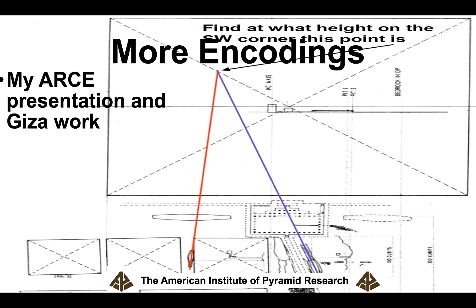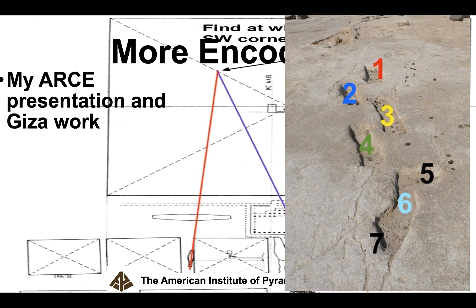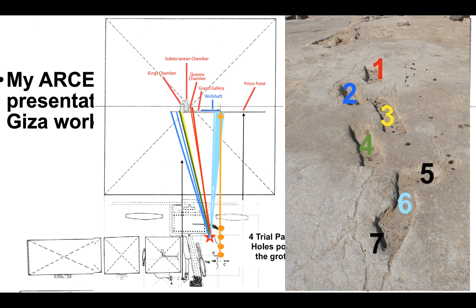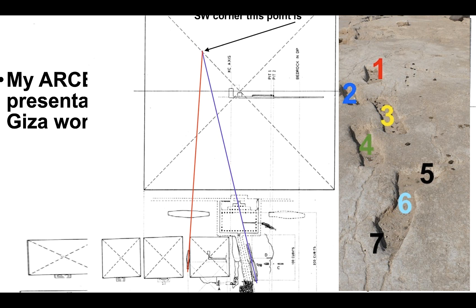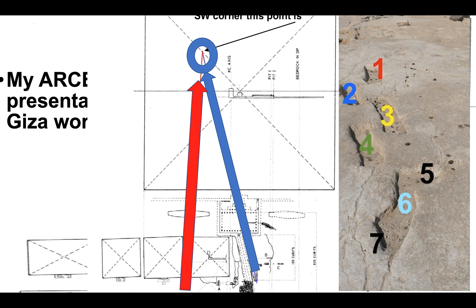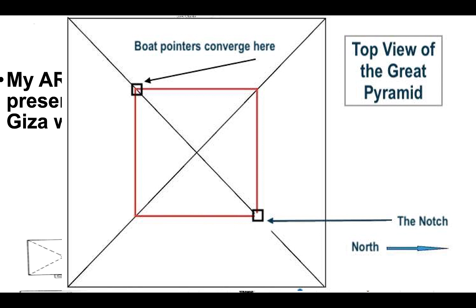Here are some more encodings from my RC work — a presentation I gave last month at the American Research Center's first virtual annual convention, along with other work I've done around Giza. I took these pointers on the east side of the Great Pyramid and showed that they pointed to places within the pyramid itself, which again seems to be Hemiunu's design. The angles of the boat pits on the east side are laid out basically east-west, but not exactly, because when you follow the pointers they point to a spot on the southwest aris angle of the Great Pyramid.